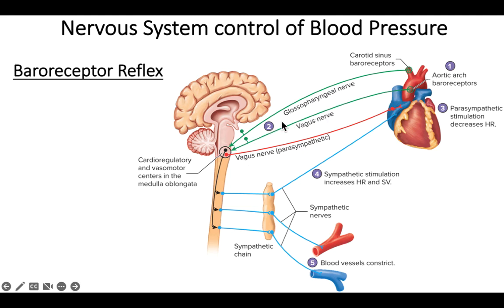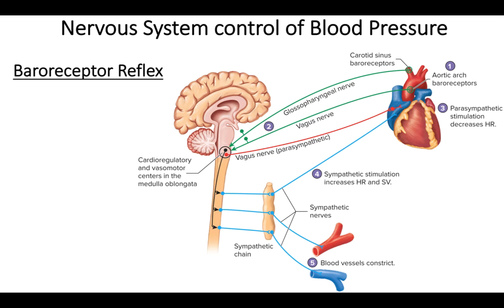These are sensory neurons that send signals to the medulla oblongata, which has the cardioregulatory and vasomotor centers — control centers for the heart and blood vessels. If blood pressure is too high and we're trying to bring it down, the medulla will increase parasympathetic stimulation. The vagus nerve brings that parasympathetic stimulation to the heart and slows the heart rate. Parasympathetic stimulation decreases heart rate, which decreases cardiac output, and that is a way to decrease blood pressure.